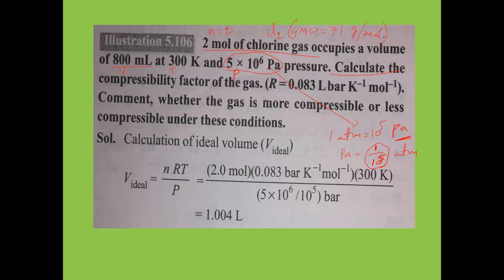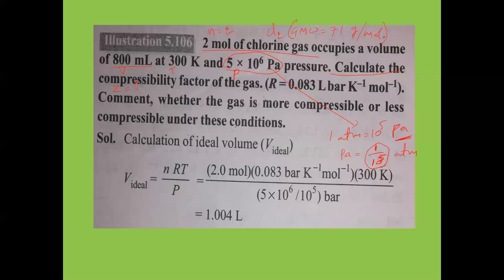We need to calculate the compressibility factor Z. R value given is 0.083 (for bar units) or 0.0821 (for atm units) — that's only a small difference. If pressure is in bar, use R = 0.083; if in atm, use R = 0.0821.